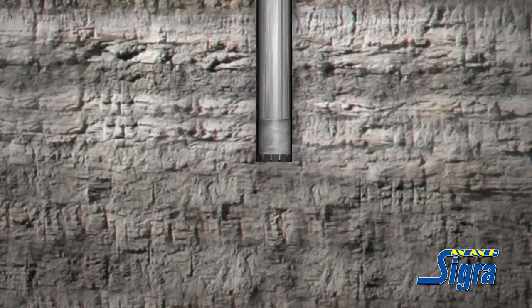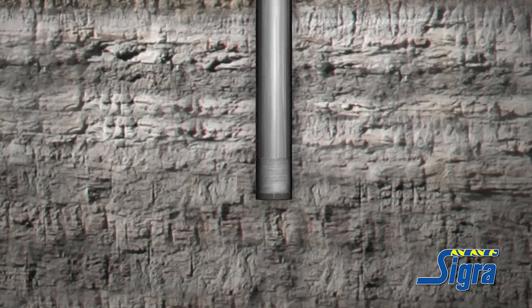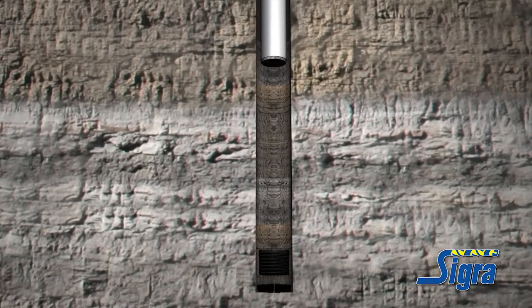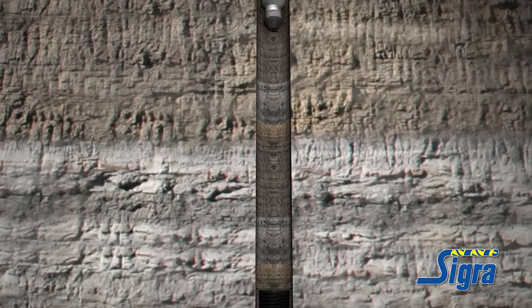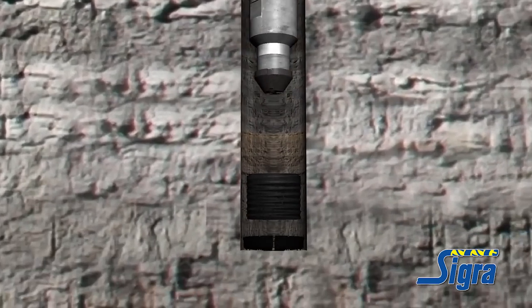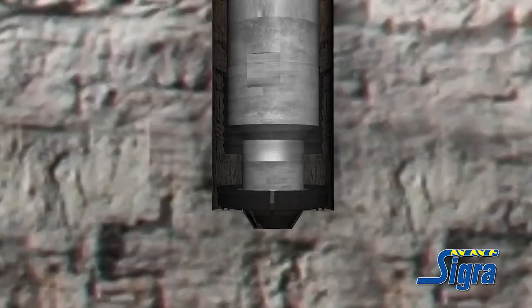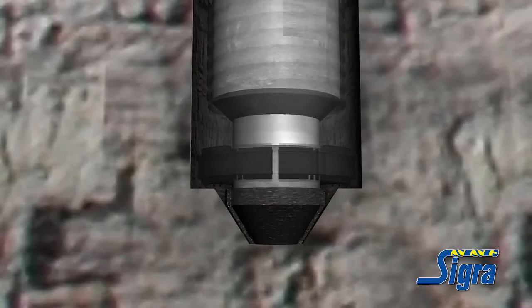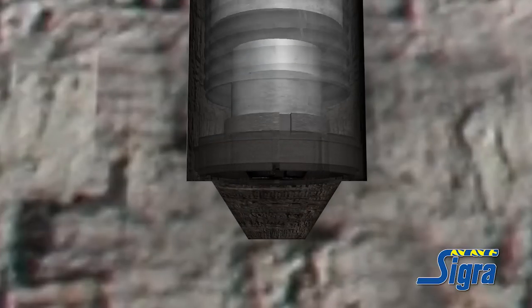At the test depth, the last HQ core run is pulled as normal. A special countersink tool is pumped in place of the inner barrel and is used to grind any upstanding core away, leaving a cone depression in the top of the rock immediately below the HQ bit face mark.